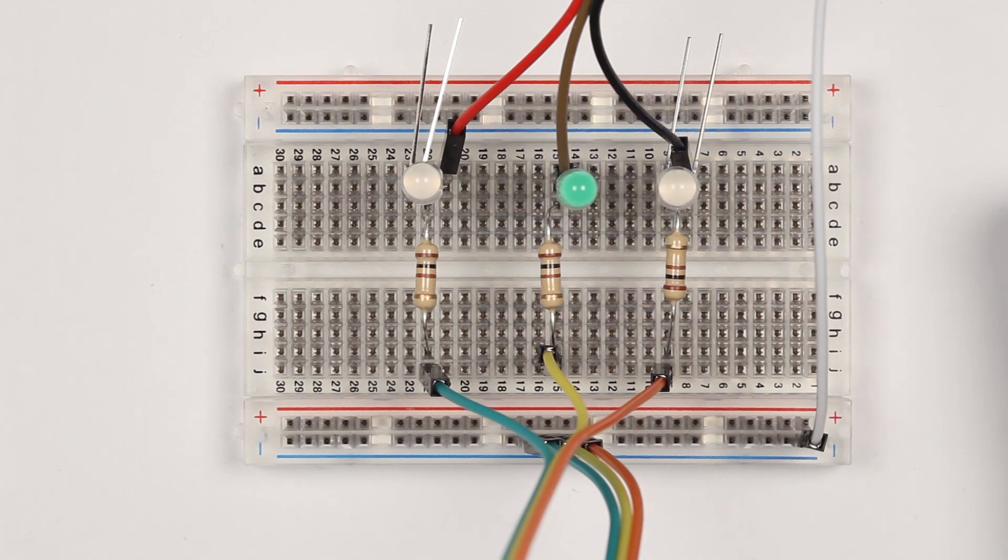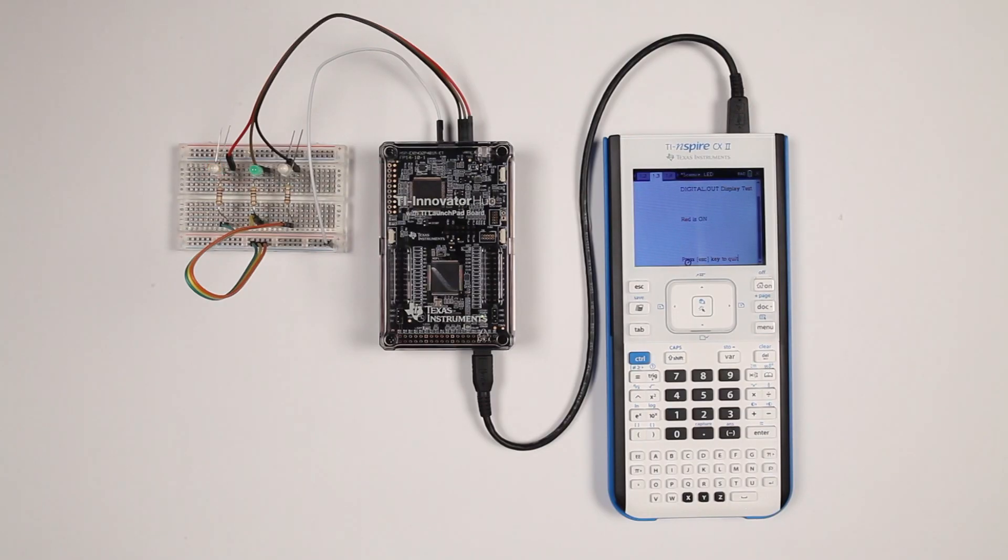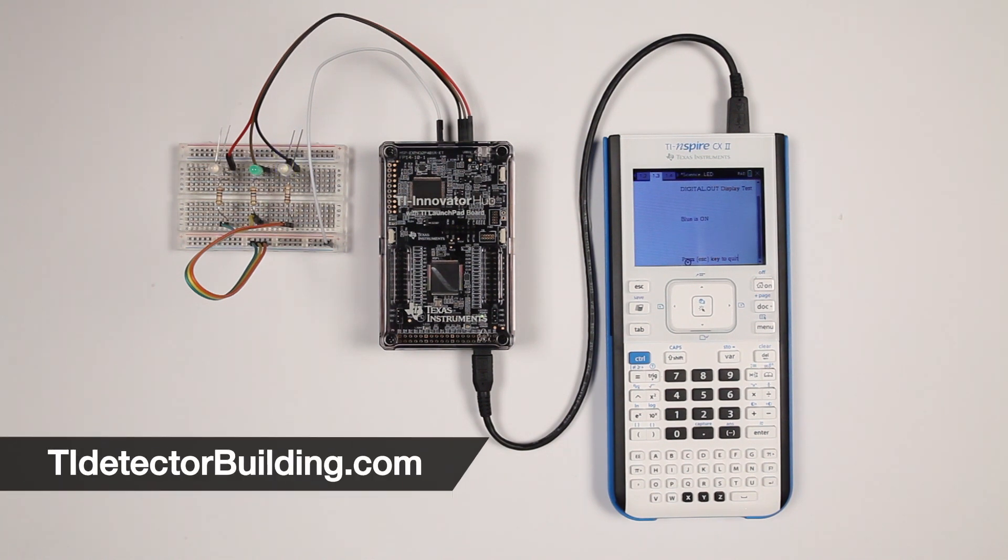Run your program and, if a particular LED does not work, check the wiring and polarity of that LED. Ensure it is wired to the correct breadboard pin, then carefully review your code. Continue on to Part 2 to learn how to build and read your temperature sensor and visit TIDetectorBuilding.com if you need additional details.